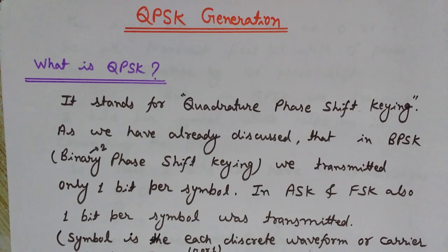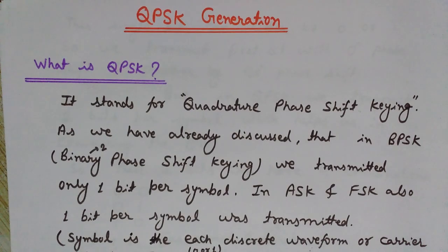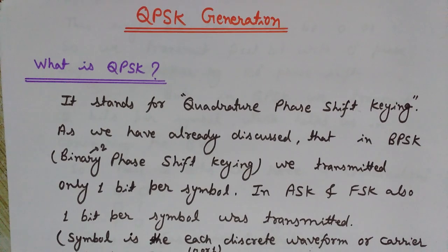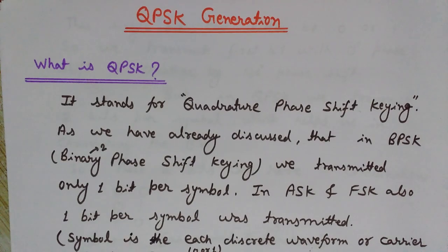Earlier we have seen that in ASK, FSK, and BPSK we transmitted one bit per symbol. A symbol is each discrete waveform or carrier state — one pulse, one waveform is known as the symbol. So in every symbol we transmitted only one bit. Let's talk about BPSK because QPSK and BPSK are both phase shift keying methods. BPSK is binary phase shift keying, while QPSK is quadrature phase shift keying. In BPSK we transmitted one bit per symbol.